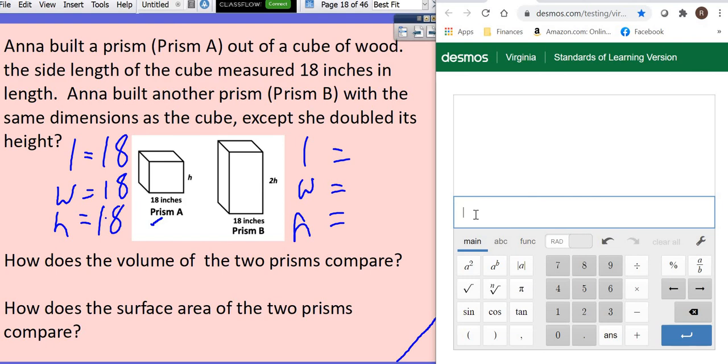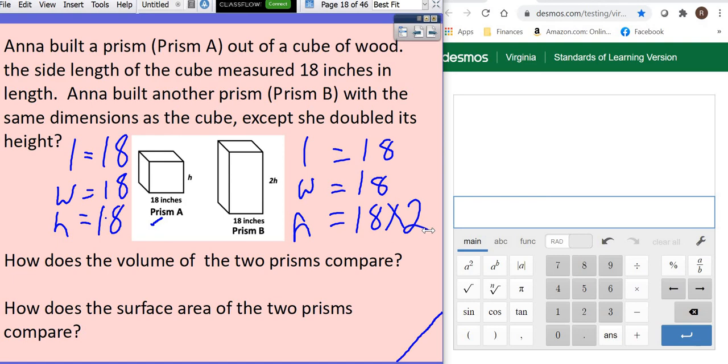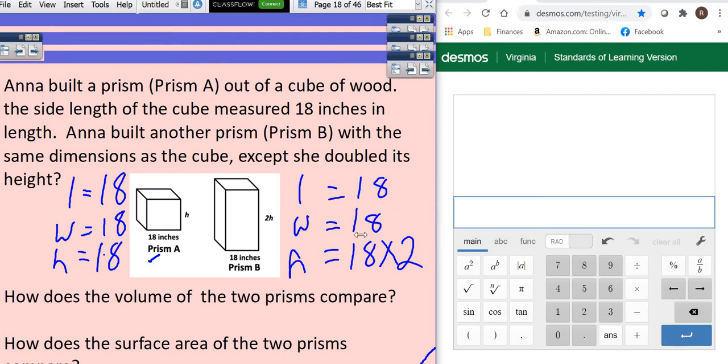So if this is a cube, that means everything is the same. That means my length, my width, and my height were all 18. But then over here, she did another one. And it said that she doubled the height. So the length and the width stayed the same, those stayed 18. But this was 18 times 2, the height. What is the volume, or how does the volume of the two prisms compare? They're not asking you to figure it out. They're just asking what's going to happen. Well, when you multiply one attribute, which is one part of it, that's going to do the same thing to the volume. So if you doubled the height, that means your volume will also double.